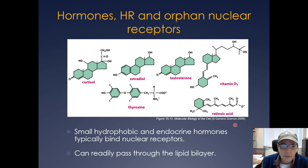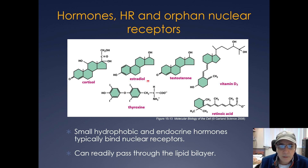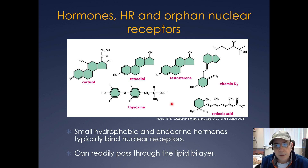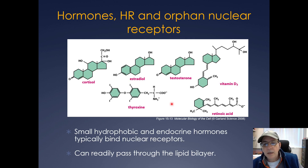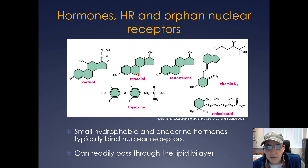Moving on to endocrine signaling: there are many hormones and hormone receptors, including testosterone, estradiol, cortisol, and retinoic acid — small hydrophobic endocrine hormones that typically bind to nuclear receptors. We've already seen these nuclear hormone receptors when discussing the estrogen receptor in the ChIP-seq paper and the glucocorticoid receptor. These hormones can readily pass through the lipid bilayer — many have cholesterol as their starting point, especially testosterone, estradiol, and cortisol.